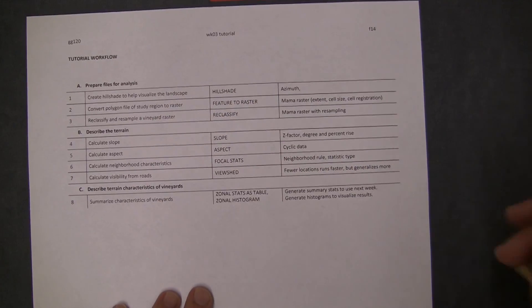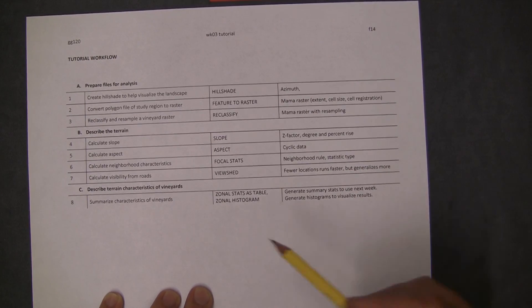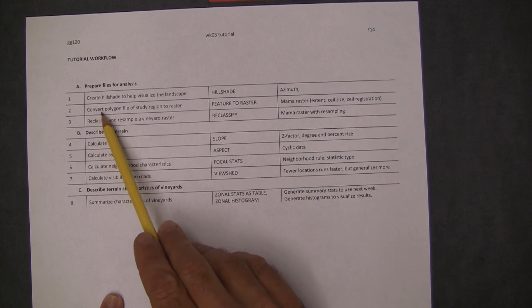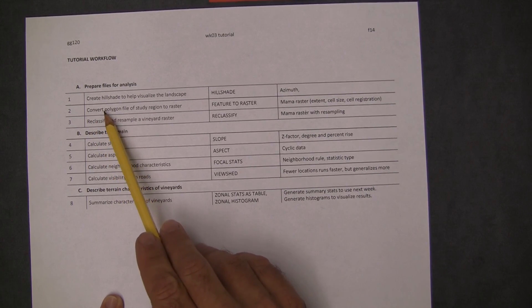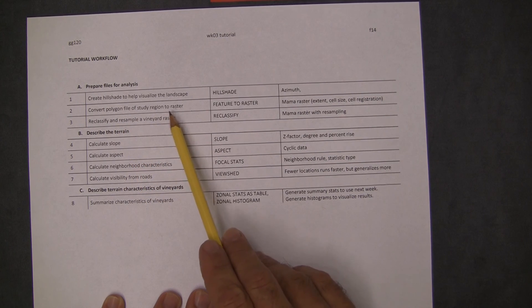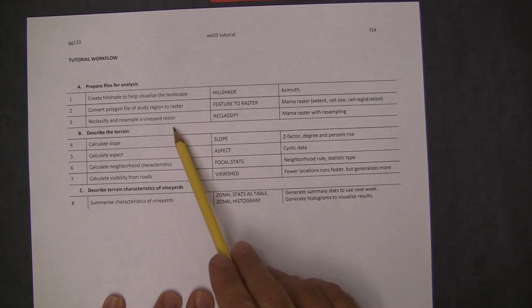I'd like to talk about this mama raster concept that's going to come in twice. Here we're basically converting a layer that's in a different format than what we've been using into a raster, and here we're taking a raster that's much bigger than our study site and we have to reclassify and resample.